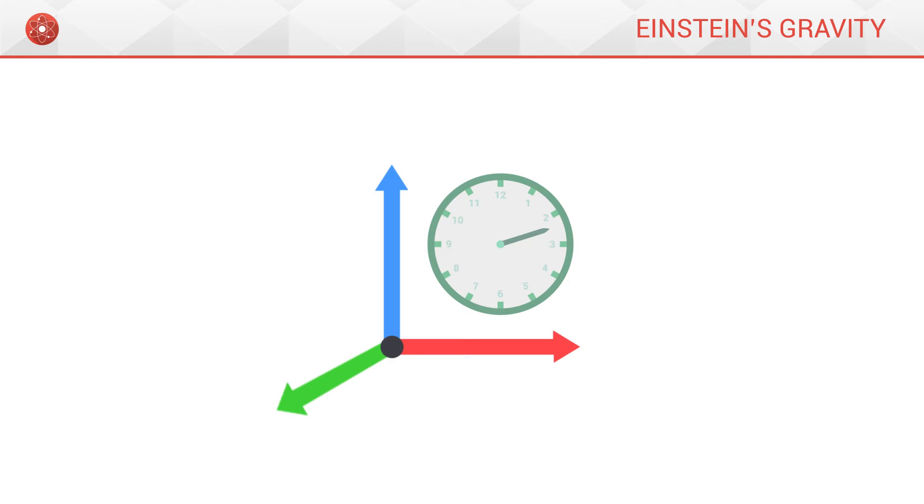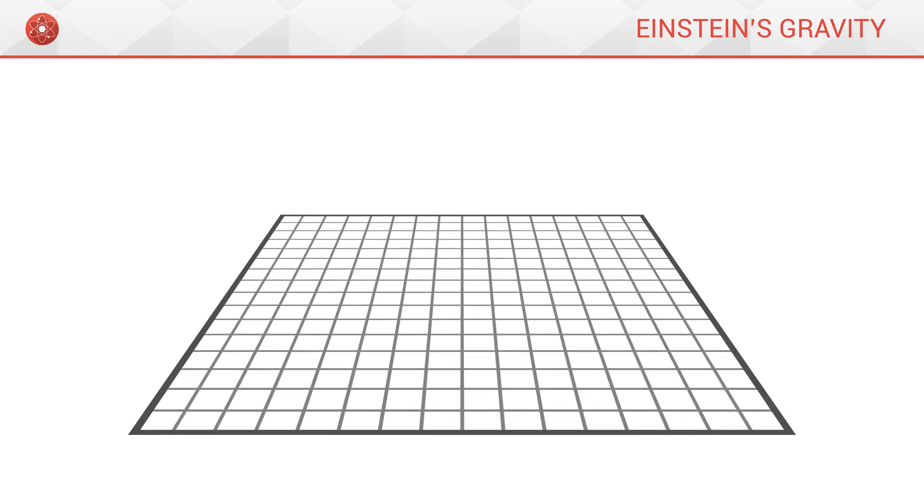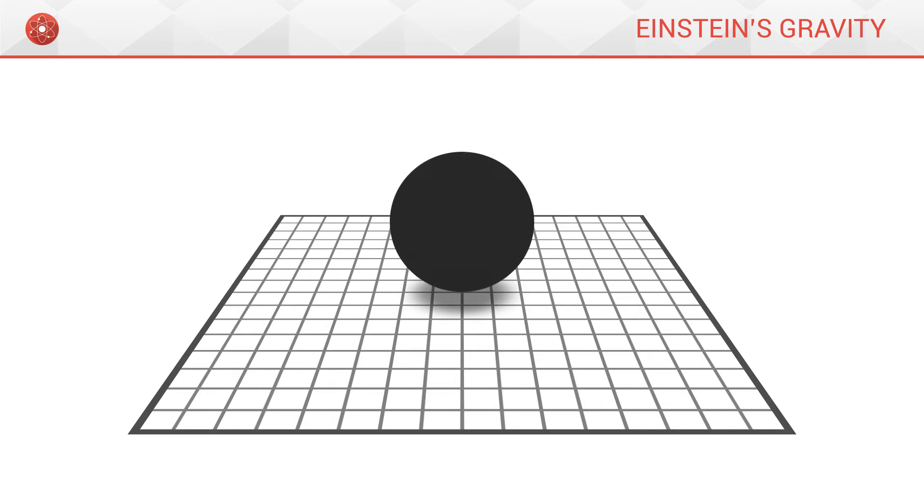In space-time, objects exist in a given place, at a given time. Now, let us try to conceptualize space-time as a grid, on which we could place an object A.